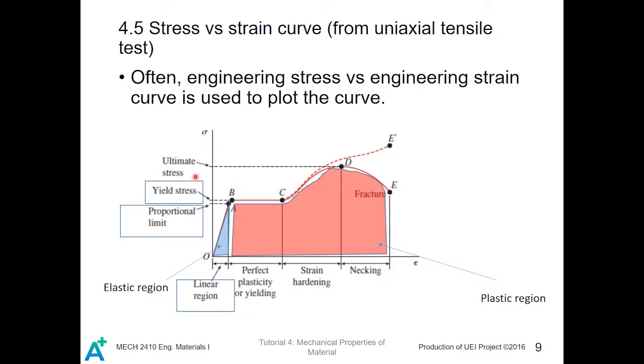And then afterwards, you will first enter the proportional limit, which is the limit of the linear region. And after the proportional limit, there will be the yield stress. After the yield stress, then you will enter the plastic region, where when the loading is released, the material can never be deformed into its original shape without external force, which is the red region.